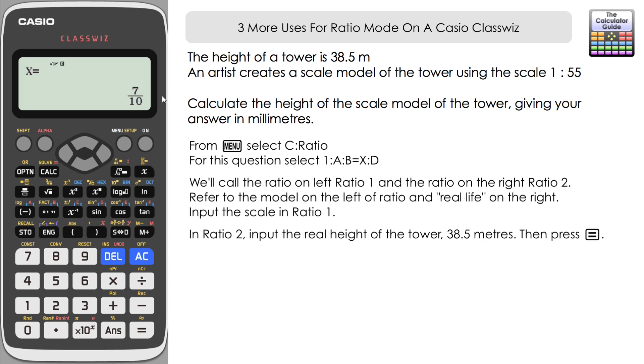What we want to know is x which is how high the model is going to be. If we press equals here we've got the answer, 7 tenths. So it's 7 tenths of a meter. Let's just press SD on that. That's 0.7 meters.